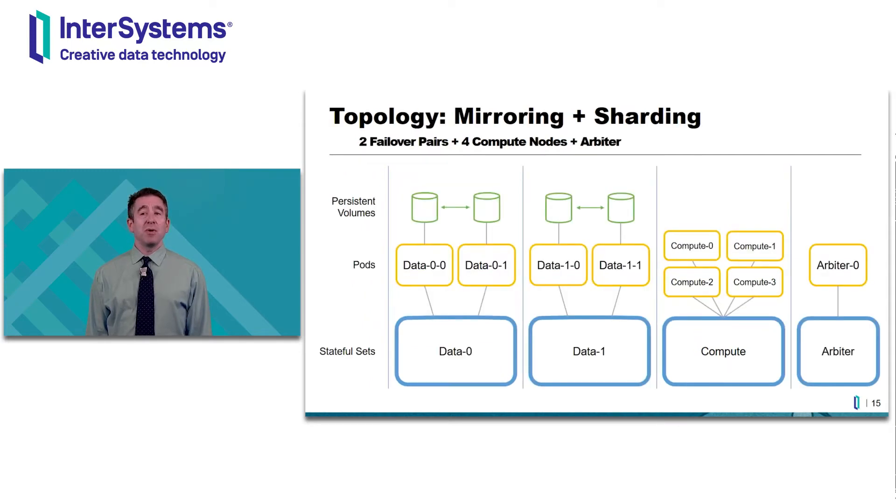In this topology, we have two shards, two mirrored shards that is. Notice that each failover pair gets its own stateful set. Giving each failover pair its own stateful set has several advantages. One is that it gives each failover pair consistent numbering with respect to having a pod 0, pod 1, etc. Another is that it simplifies node and zone anti-affinity, allowing us, for example, to divide our primary and backup members between two availability zones. The advantage relevant to this discussion is that it allows us to upgrade our failover pairs one at a time.